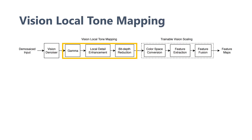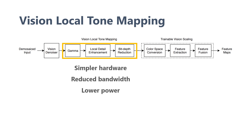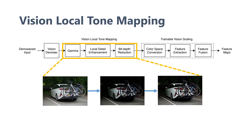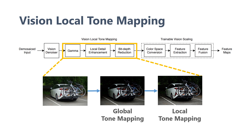The second block in our pipeline is a trainable local tone mapping operator which reduces the bit-depth of its input. Reducing the bit-depth translates into simpler hardware, reduced bandwidth, and significant savings in power. Unlike uniform bit-depth reduction, our method makes sure that the features essential for computer vision applications are preserved after bit-depth reduction. We do this by using a global nonlinear transformation followed by a local detail-boosting operator before the bit-depth reduction. The nonlinear transform acts as a trainable global tone mapping operator, while the detail-boosting operator acts locally to preserve details in the low-bit-per-pixel output.